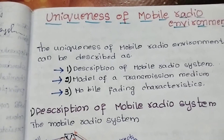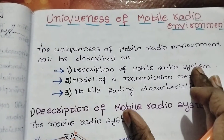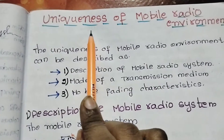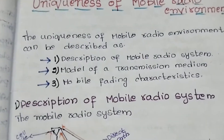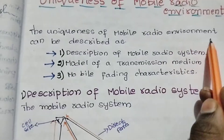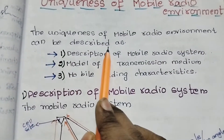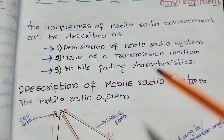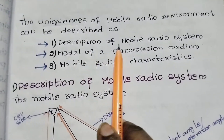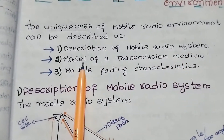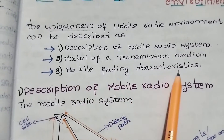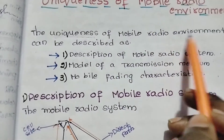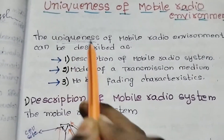There are some unique aspects of the mobile radio environment. We will explain this in three steps: Description of Mobile Radio System, Model of a Transmission Medium, and Mobile Fading Characteristics. These three steps will be explained in this video.